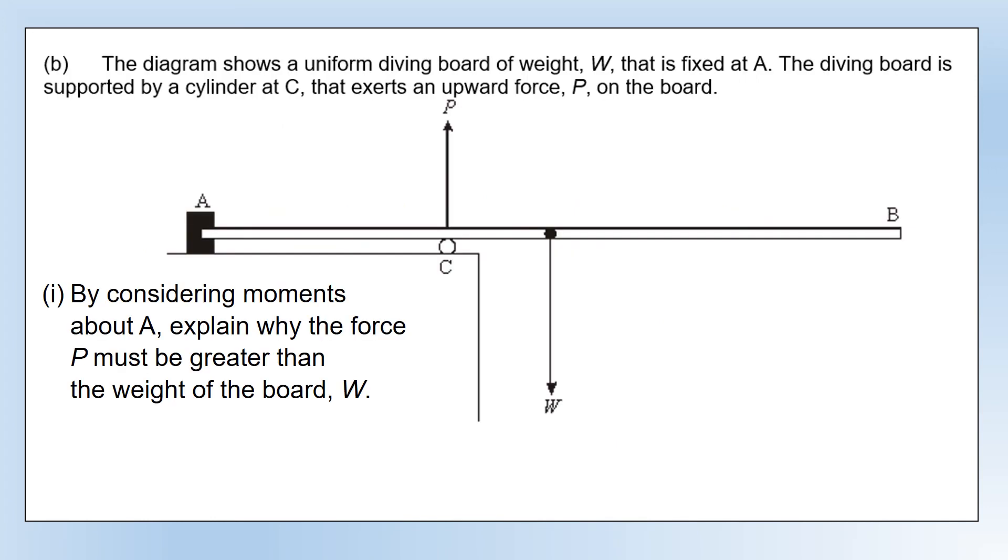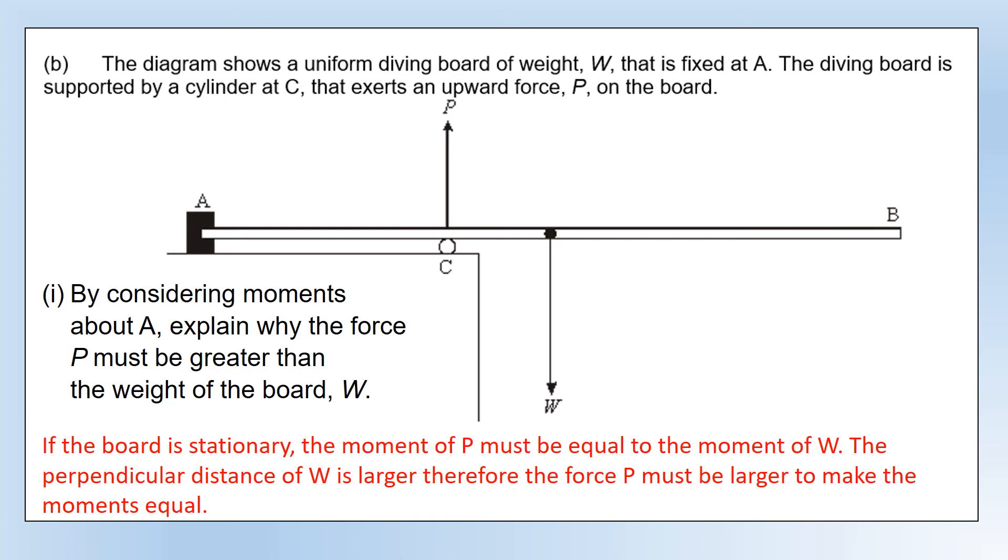We've got a diving board of weight W coming from the middle of the board, fixed at A—so A is the pivot. The diving board is supported by a cylinder at C, exerting an upward force P on the board that's keeping it stationary. By considering moments about A, explain why the force P must be greater than the weight W. Taking moments about A, if the board is stationary, the moment of P must be equal to the moment of W. But the perpendicular distance of W is much larger, so therefore the force P must be larger to make the moments equal.